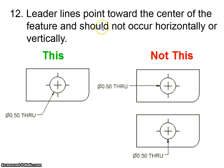Okay, leader lines should point toward the center of the feature and should not occur horizontally or vertically. So leader lines should be angled so that you can tell what they're pointing to so they don't confuse them with object lines or other extension lines. So these two here would be incorrect. This would be the correct way to do it.